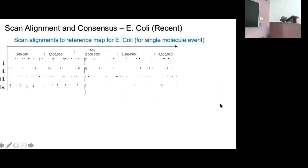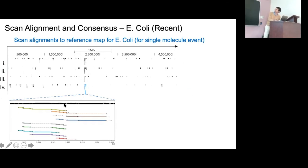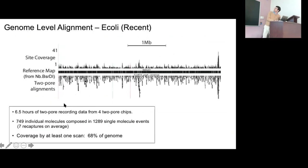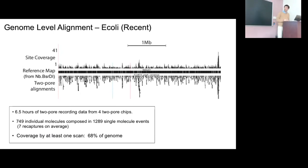We're now moving to genome scanning with E. coli — a 4.6 megabase-pair genome. Applying the same procedure: this shows a single molecule measured from E. coli with four recaptures. Many scans don't align and look random, but there's a hot spot of many alignments consistent across all recaptures. We can confidently say that molecule comes from that point on E. coli, map it to the reference, look at all aligning scans, and create a consensus. Scaling this, we've been able to map about 68 percent of E. coli. It is possible to use this dual-pore technique to do a bit of genomics.